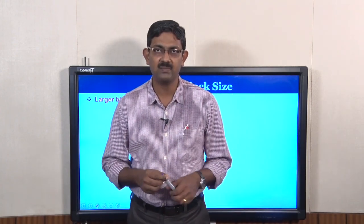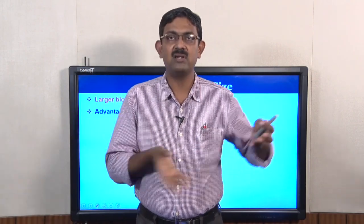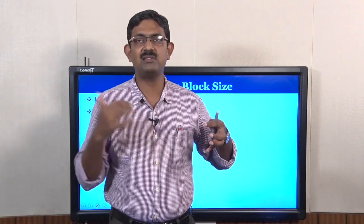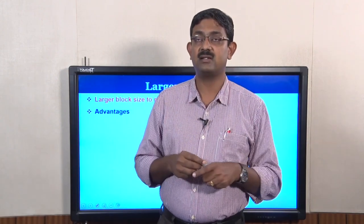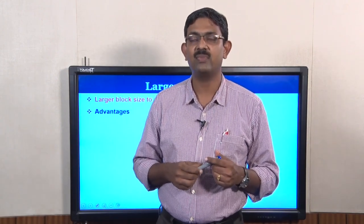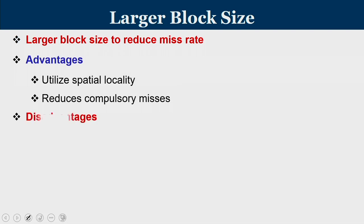The first technique is called larger block size to reduce miss rate. When increasing block size — say previously it was 16 words — for every miss we bring 16 words, which reduces compulsory misses for the next 15 words. If the block size were 32 words, for every miss we bring 32 words. So when you increase the block size, you increase spatial locality, which reduces compulsory misses.